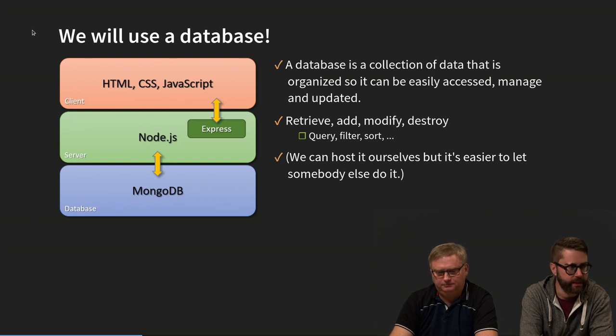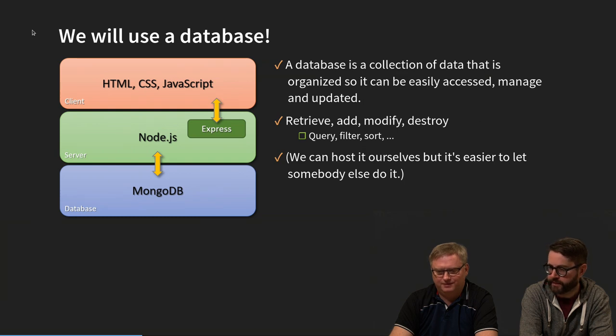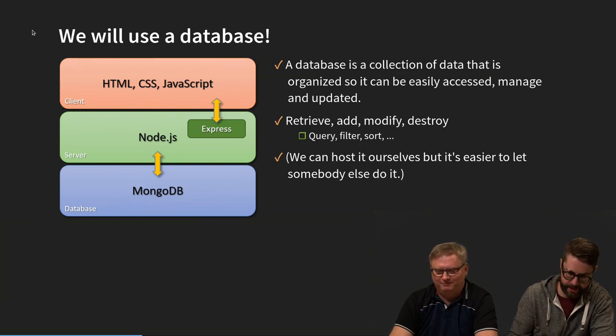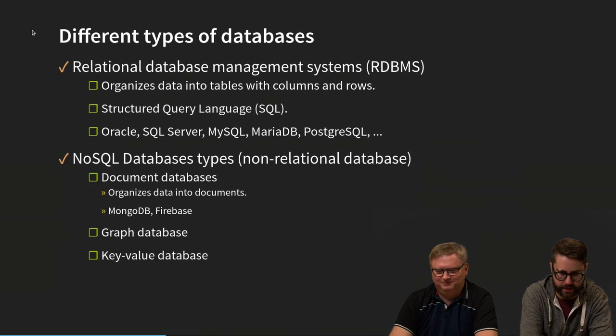Why is it called Mongo? It derives from 'humongous database' — due to the ability to scale with ease and handle a lot of data.